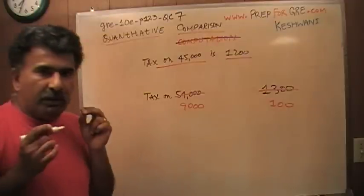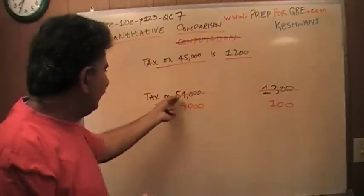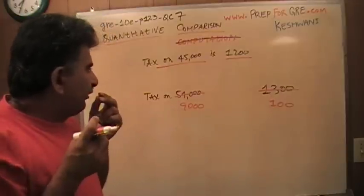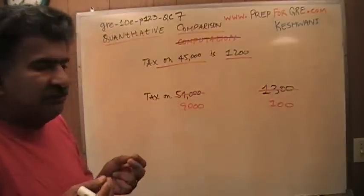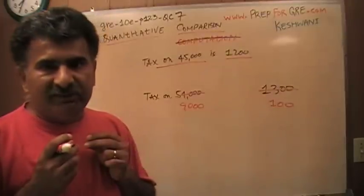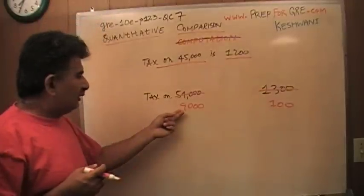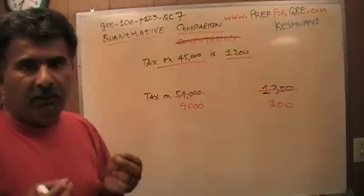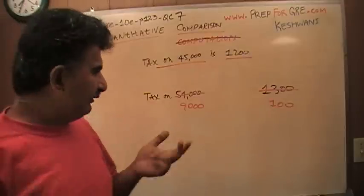So now what I'm comparing is not the tax on 54,000. What I'm asking is, is the property tax on 9,000 more than or less than or equal to 100? Well, let's take a look.